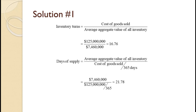Days of supply is calculated as the average aggregate value of all inventory of $7,460,000, divided by the quantity of the cost of goods sold of $125 million divided by 365 days. That equals 21.78. Rounding this value is okay, but not required. Days of supply can also be calculated as 365 days divided by the turns of 16.76 — you get the same answer either way.